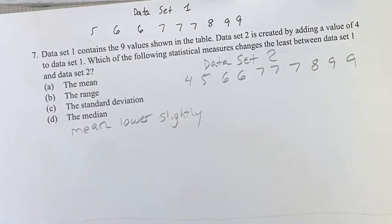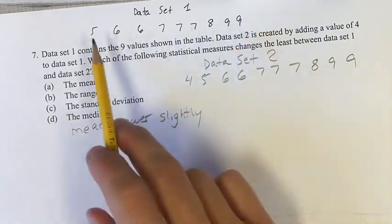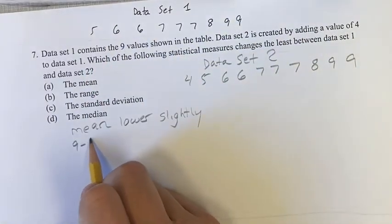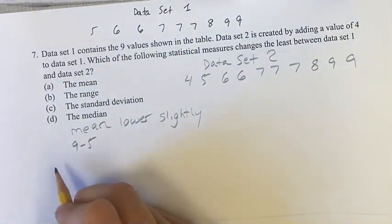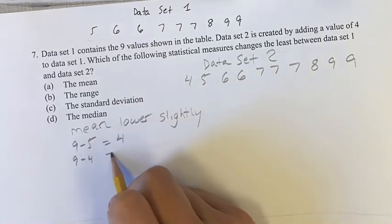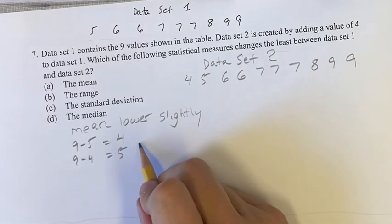The range. You can just calculate the range because it's really easy. You take the largest value and subtract the smallest value. In data set 1, that's 9 minus 5, which equals 4. In data set 2, it's 9 minus 4, which equals 5. So it's going to increase slightly.